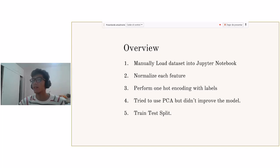The general procedure is that I will manually load the dataset into a Jupyter notebook using the IBM cloud. Then I will normalize each feature, perform one hot encoding on the target column.